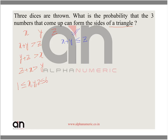Let us start with z equal to 1. If z is 1, then x plus y must be less than or equal to 1. But since both x and y are at least 1, the minimum value of x plus y is 2. So this case is not possible — there are 0 solutions.